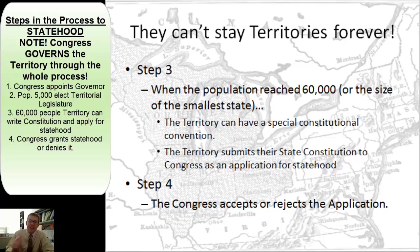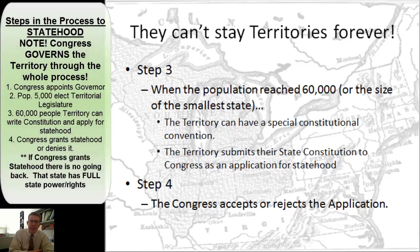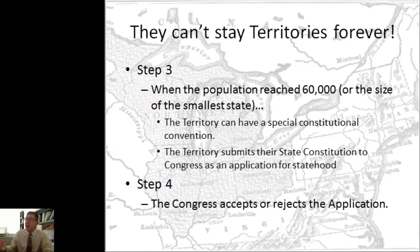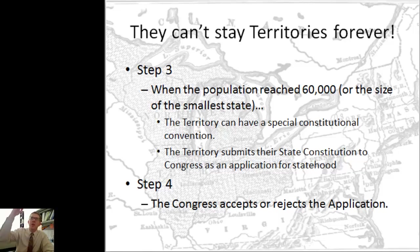A point of emphasis: once a territory becomes a state, there's no going back. Congress can't say we want you to change this — once you're a state, you have the full powers of statehood. What's important about that is, we have our original 13 states, but when a new state gets added, they aren't a junior state. Once they're a state, they are as powerful as the states that were here from the beginning. There's no tiered system. A state is a state is a state.